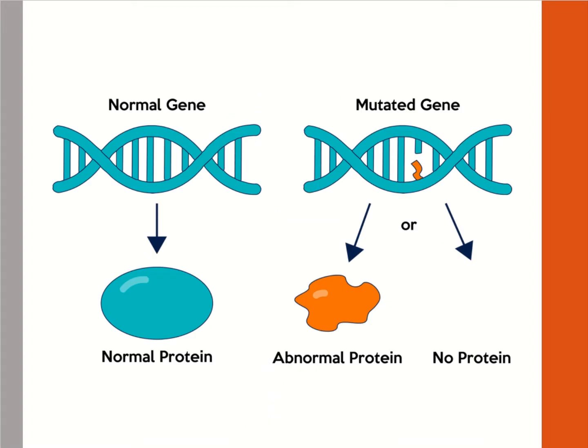Looking at a picture of a normal gene versus a mutated gene, you can see that one nucleotide is different from what it should have been, and this can cause an abnormal protein to be made or no protein at all.